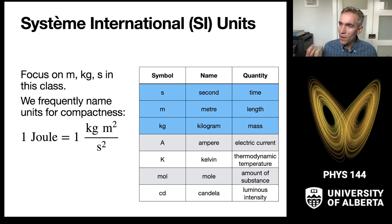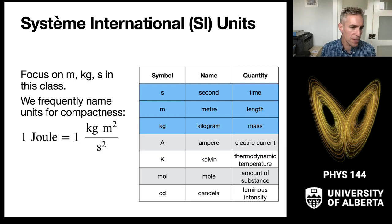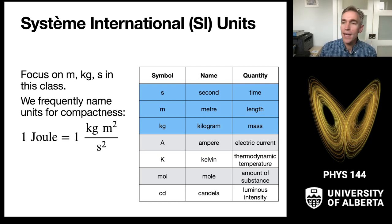We are really just going to focus on those top three: measures of length, mass, and time. We will often make units into composite units for compactness. For example, one joule is a kilogram meter squared per second squared — we just give it a name and an abbreviation so that we don't have to write out meters, kilograms, and seconds in detail all the time, and because it often represents a physically interesting quantity: in this case, energy.